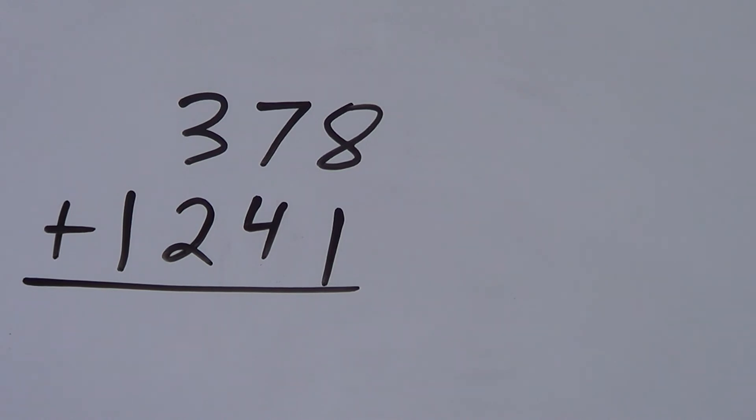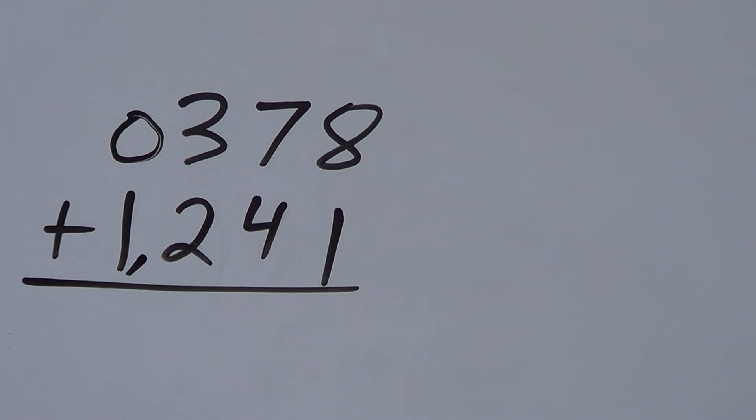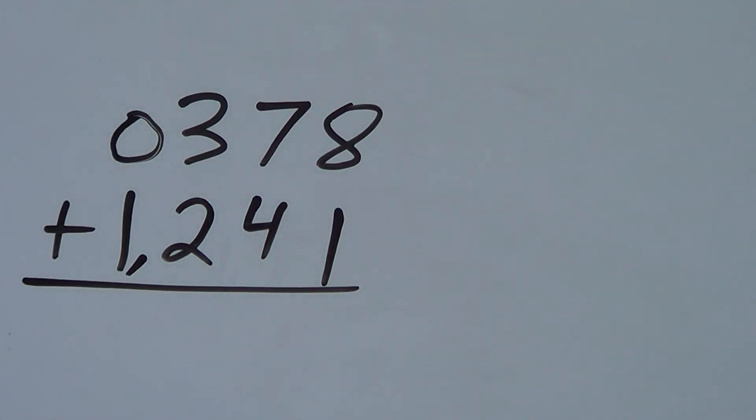OK. So this time we have 378 plus 1,241. We line up the columns. You see, this number is bigger than this one. So there's nothing here. You can put a 0 there if you like. Because really you just add the 1. But we leave this one empty or put a 0 there because there's nothing there. But we add it like normal.